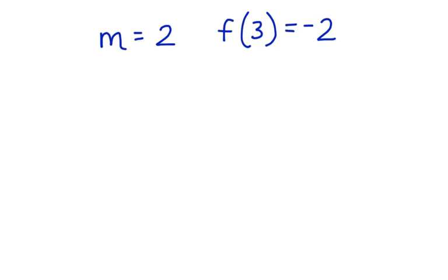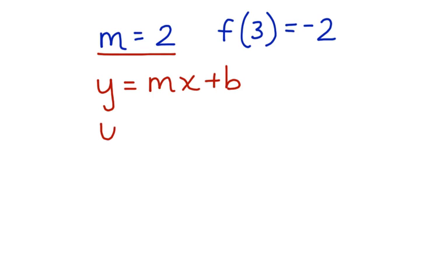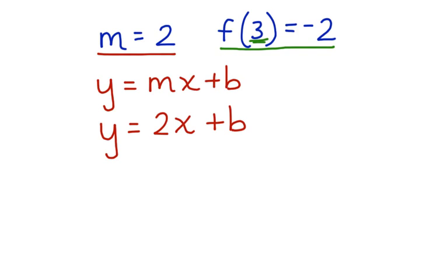Can you write an equation given this information? Let's think about that. First, let's write an equation in slope-intercept form: y equals mx plus b. Now let's look at what information we've been given. We know that m is 2 and that 2 is the slope. Let's substitute that: y equals 2x plus b. This tells us an x value of 3 and an output or y value of negative 2, so we have an ordered pair of (3, negative 2). If we substitute those into the equation, we can solve for b.